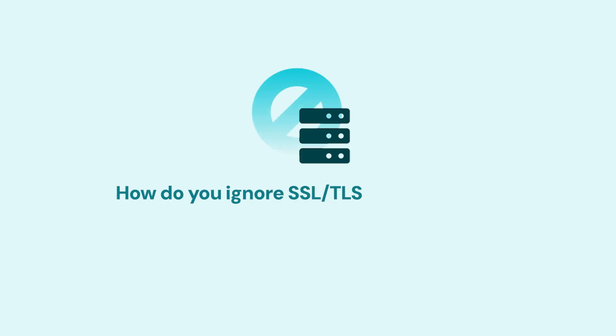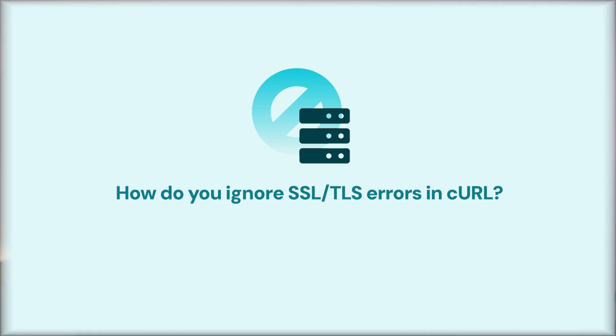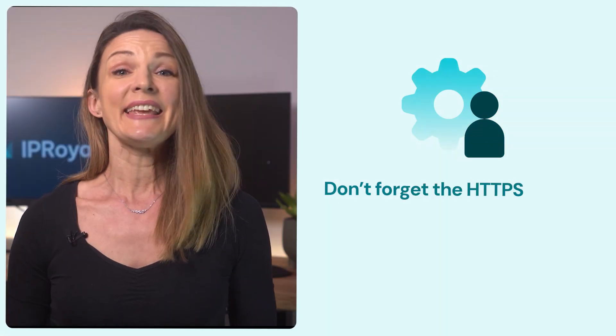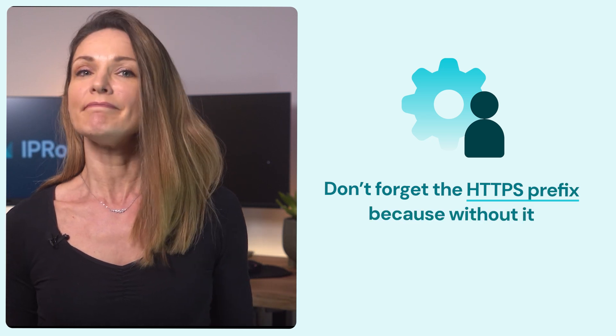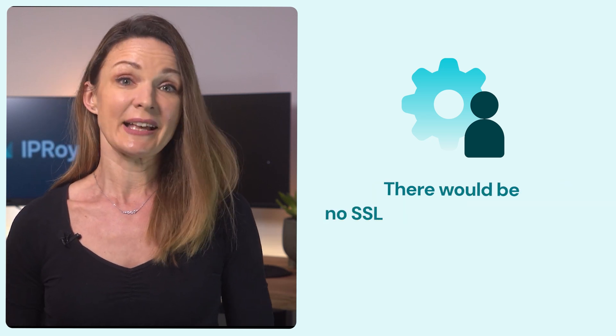How do you ignore SSL TLS errors in CURL? It's simple — you use the CURL ignore SSL flag. Just run the -k or --insecure command, and CURL will ignore any SSL security checks. Here's the command you need. Don't forget the HTTPS prefix, because without it, there would be no SSL verification to bypass.